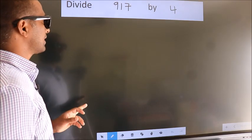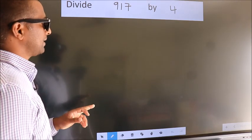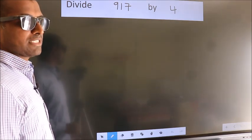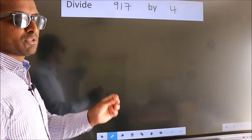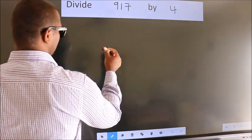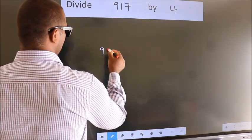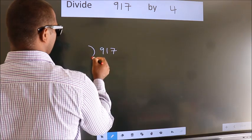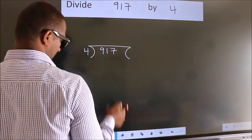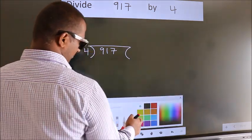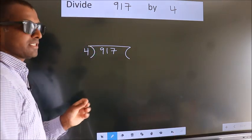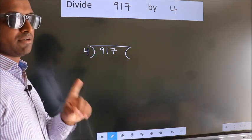Divide 917 by 4. To do this division, we should frame it in this way: 917 here, 4 here. This is your step 1.